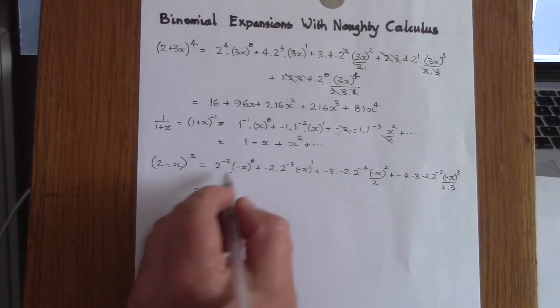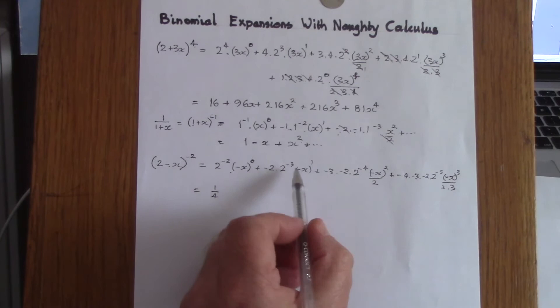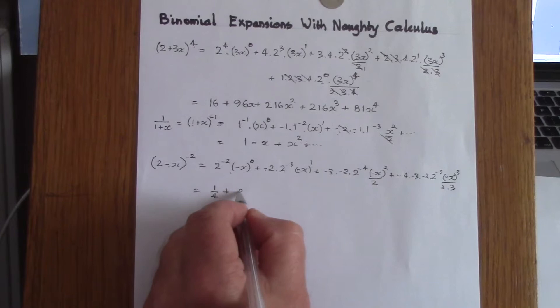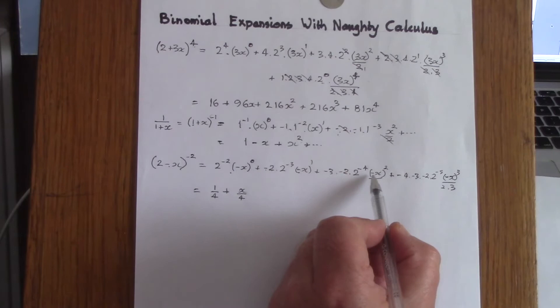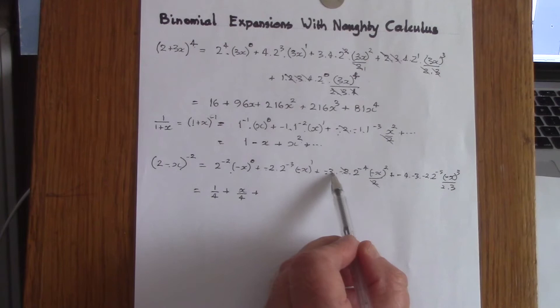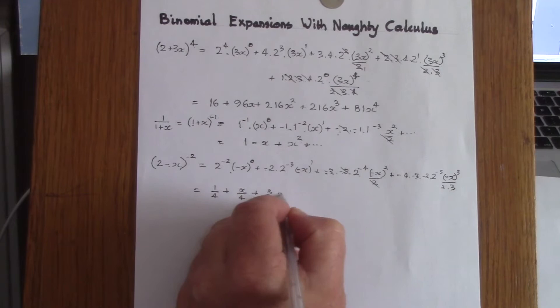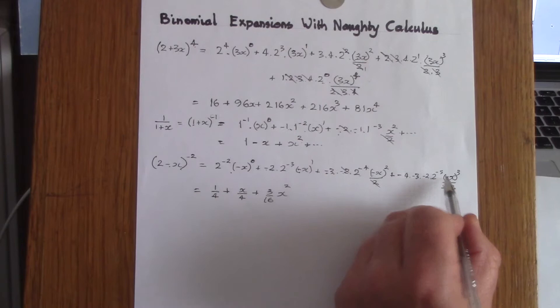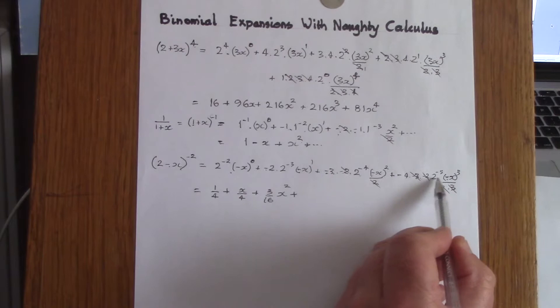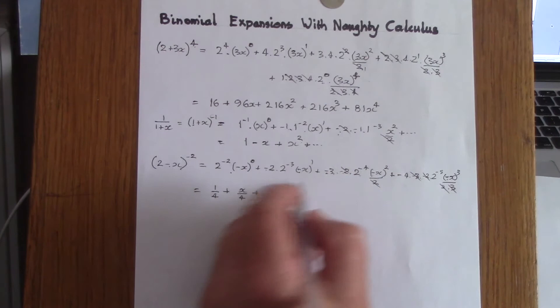2 to the power of minus 2 times 1 is one quarter. Next, minus times minus gives plus, and 2 over 2 cubed is 1 over 4, so we get x over 4. Then minus times minus times two more minuses is again plus, one of the twos cancels, and we get 3 over 16 x squared. Finally, six minus signs give plus, and the numbers simplify to 4 over 32, which is one eighth, so it's x cubed over 8.